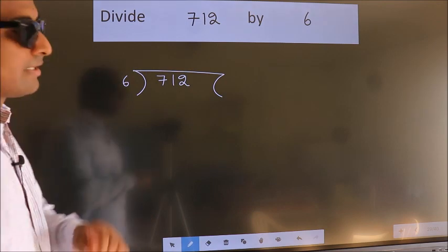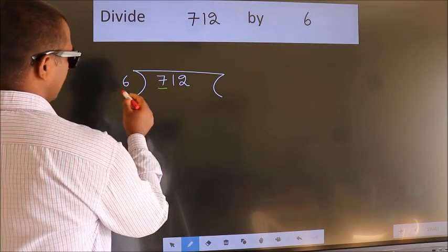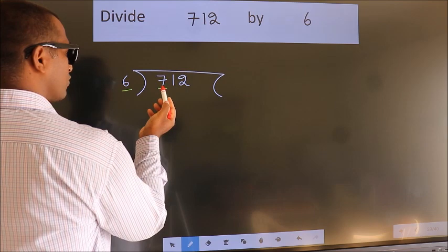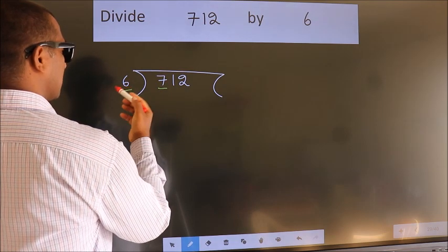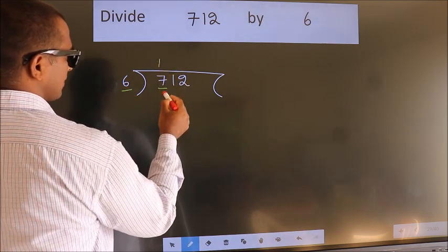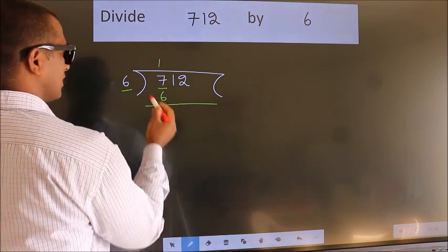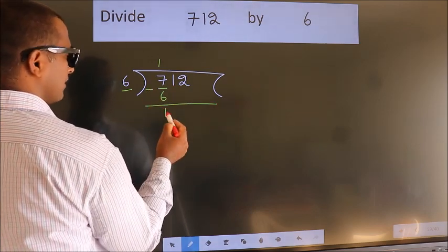Next. Here we have 7, here 6. A number close to 7 in 6 table is 6 ones, 6. Now we should subtract. We get 1.